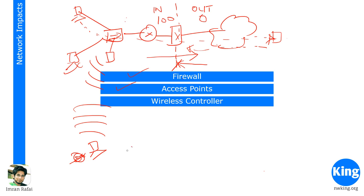Access points need to be well documented and protected. As a network administrator, you need to be careful that access points are protected. And even if protection is tricky, make sure your access points are placed such that you're not sending too much power outside the building for somebody else to get inside.